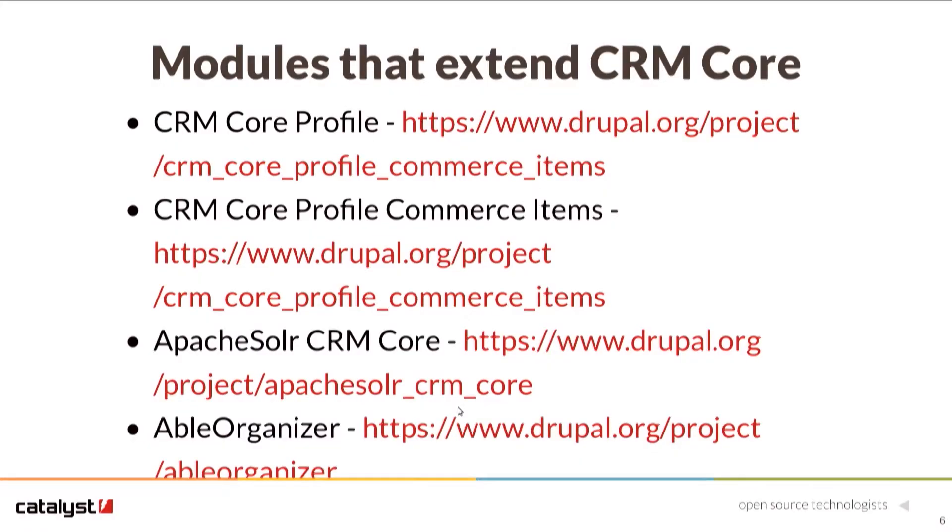Able Organizer is a distribution built using CRM Core. You can spin it up on SimplyTest.me and follow the demonstration link on the project page to see what CRM Core can actually do. It's quite powerful — it shows you all the different flavors of things you can create with it. It's a bit outdated at the moment since the last couple of years I've been mostly focused on maintaining the main project rather than derivatives like Able Organizer.